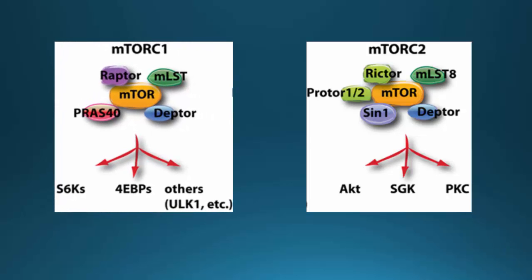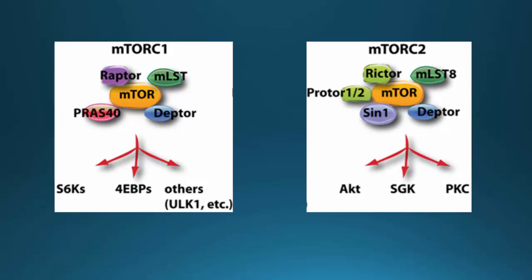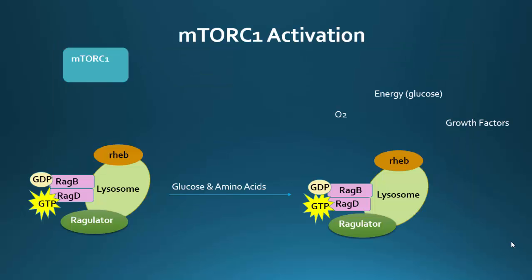mTORC1 is the master growth regulator that senses nutrients, growth factors, oxidative stress, and insulin, and responds by promoting anabolic processes and repressing catabolic processes. mTORC1 is suppressed by rapamycin. On the other hand, mTORC2 does not respond to rapamycin. mTORC2 promotes cellular survival, metabolism, and cell motility by control of the cytoskeleton. Because mTORC1 can be inhibited by rapamycin and cause major beneficial effects, it is the more researched of the two complexes, and we'll focus on mTORC1 and its activation.